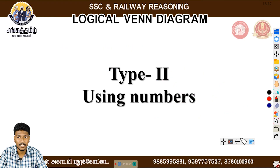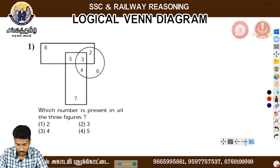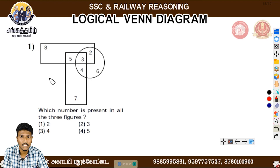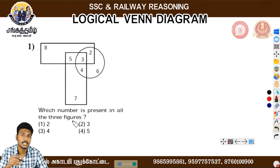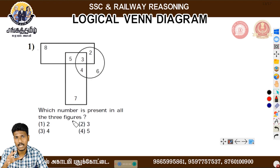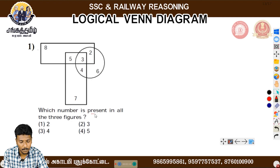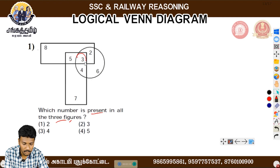So far, we have seen Type 1. Now we have to see the numbers. Now we have to see Type 2. Which number is present in all 3 figures?